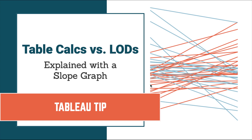One of the most difficult things for people to understand in Tableau is the difference between table calculations and level of detail expressions. In this video, I'm going to do my best to explain the difference by using a slope graph and trying to color the lines with either a table calc or an LOD. I'll explain when one should be used versus the other and the benefits of each. Let's get started.